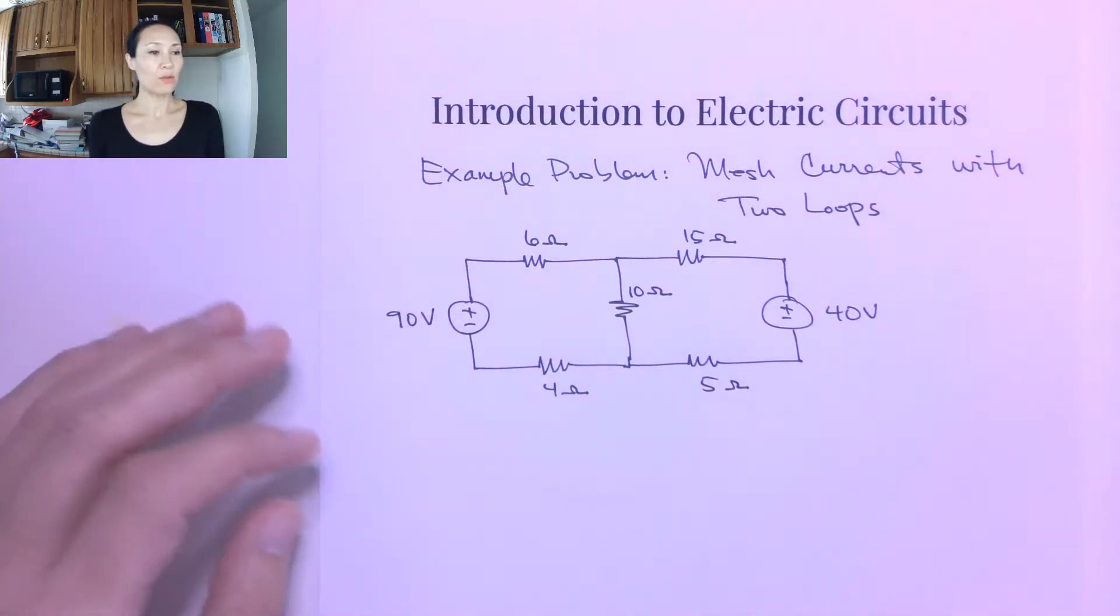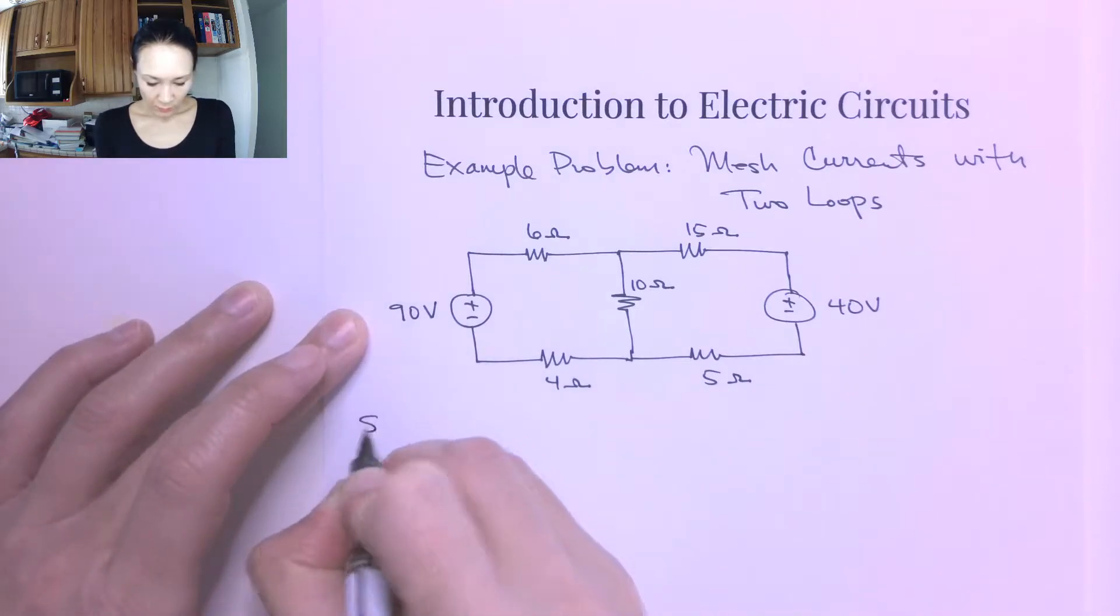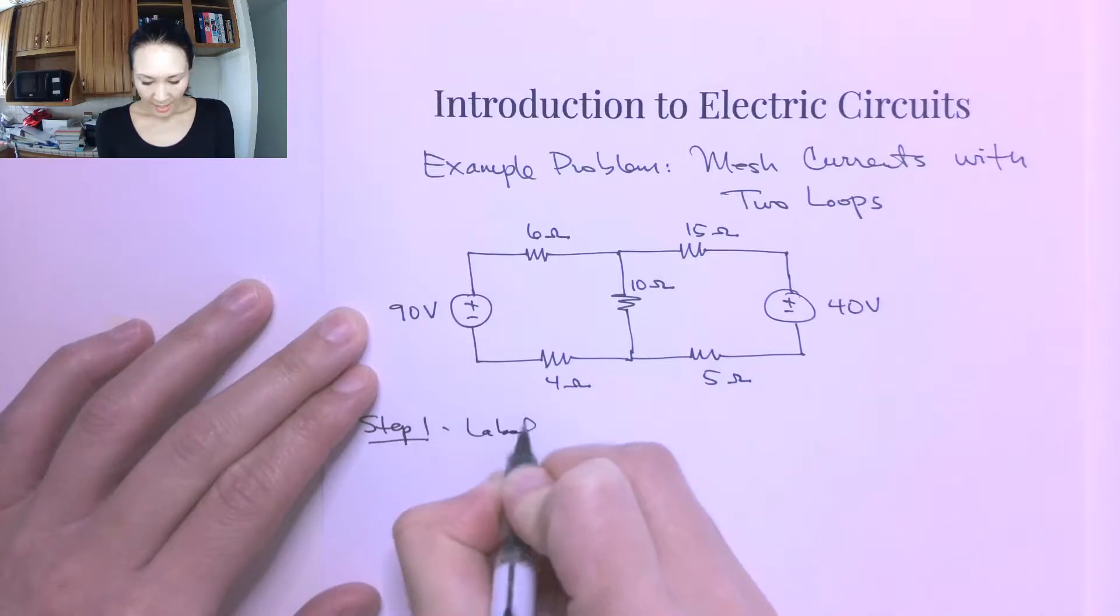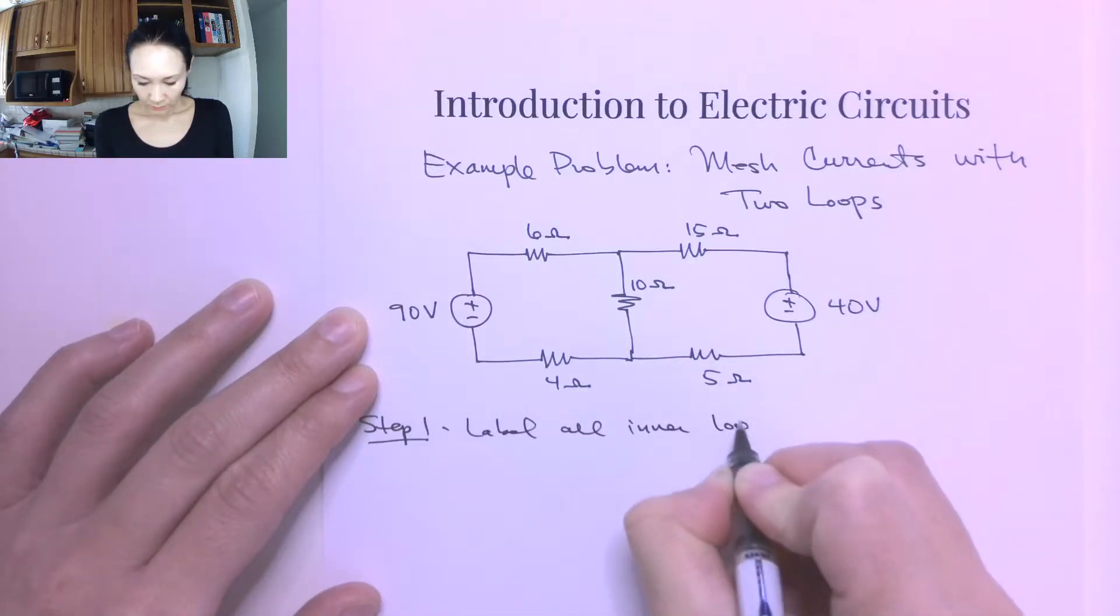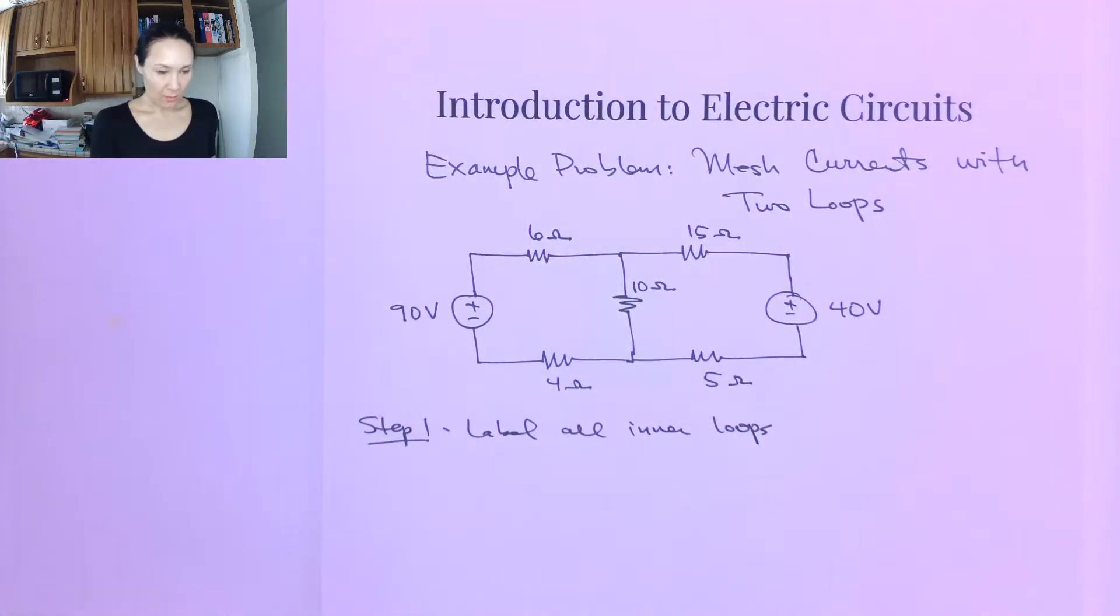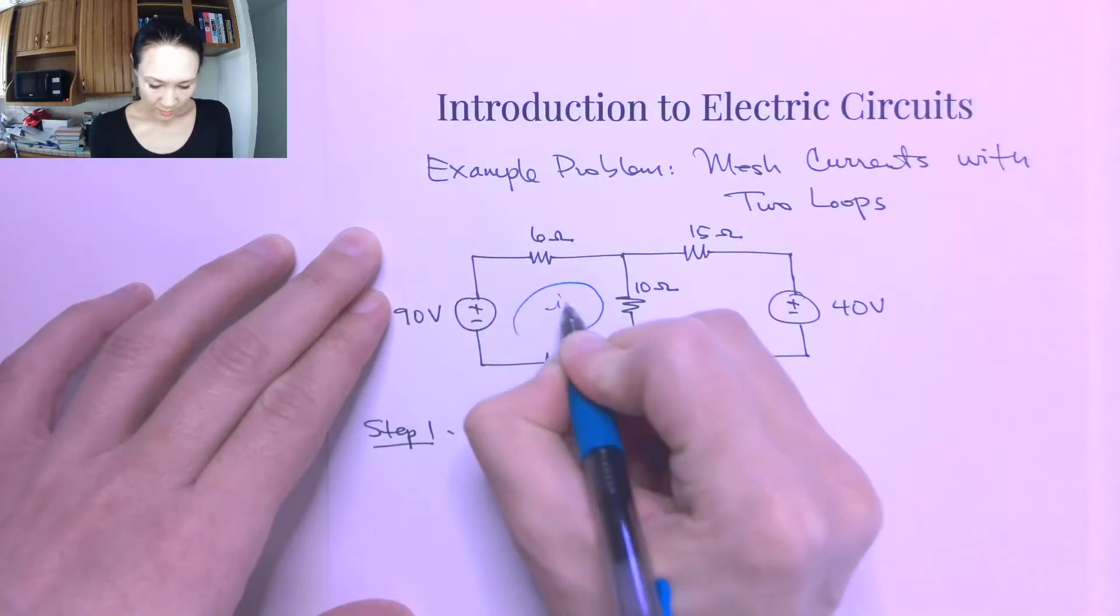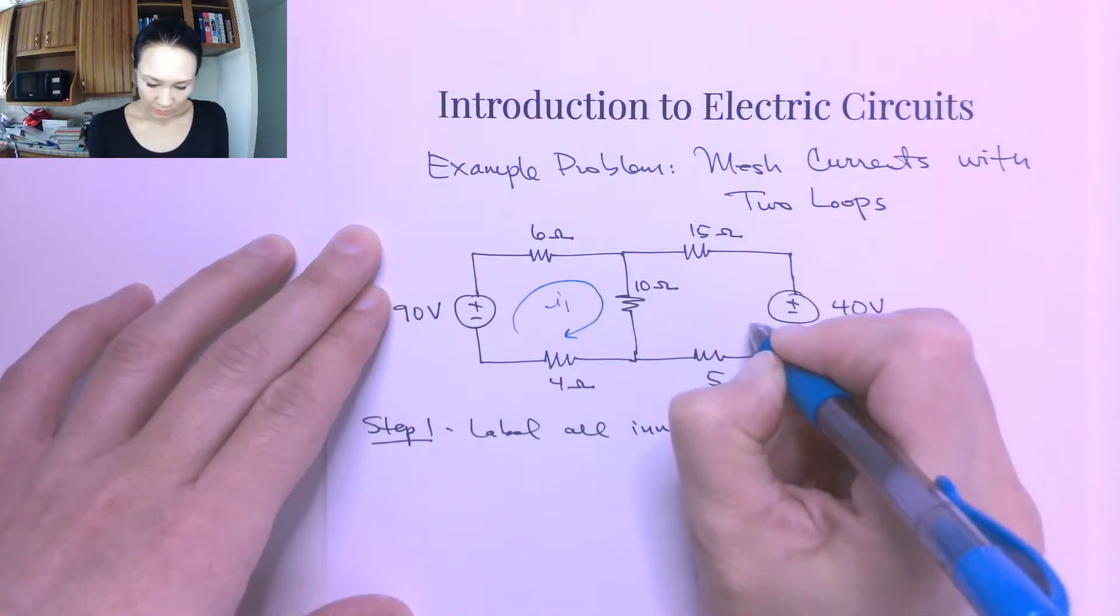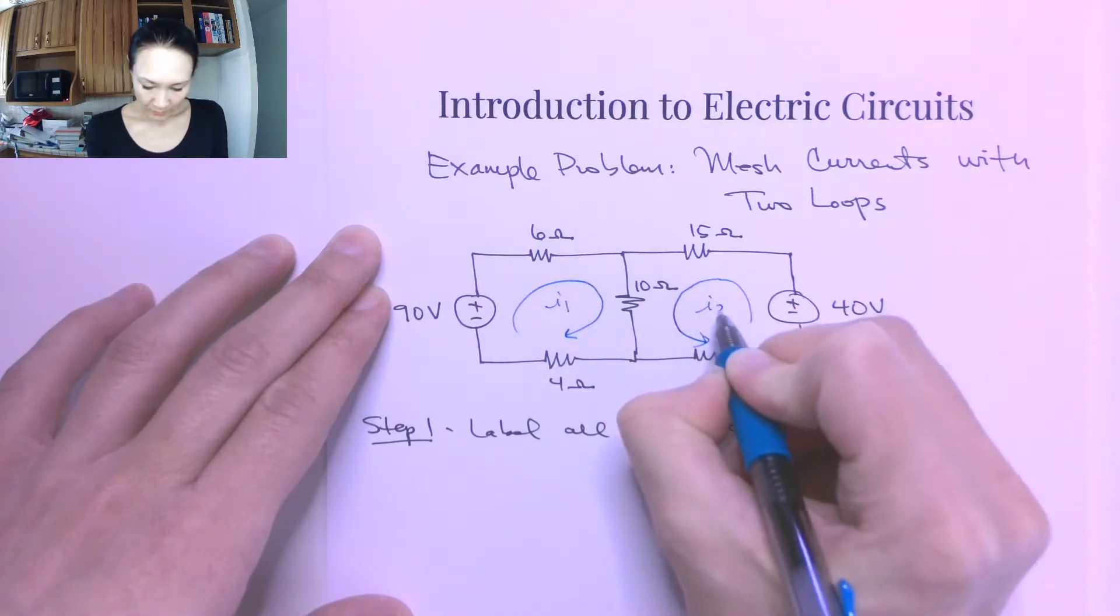Okay, so let's go through the process for the mesh current method to solve this circuit. So if you recall from the last video, step number one is we want to draw in and label all inner loops. Okay, so I will call this one loop I1.